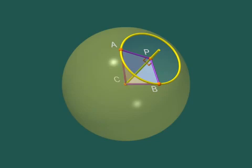But note that the hypotenuses AC and BC have the same length because A and B are on the sphere, and are hence at the same distance from the centre, C.